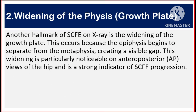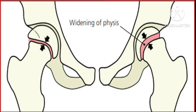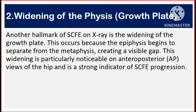Number two: widening of the physis growth plate. Another hallmark of SCFE on X-ray is the widening of the growth plate. This occurs because the epiphysis begins to separate from the metaphysis, creating a visible gap. This widening is particularly noticeable on the anteroposterior views of the hip and is a strong indicator of slipped capital femoral epiphysis progression.